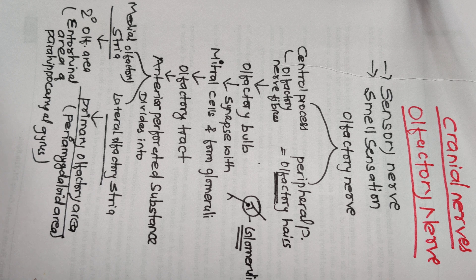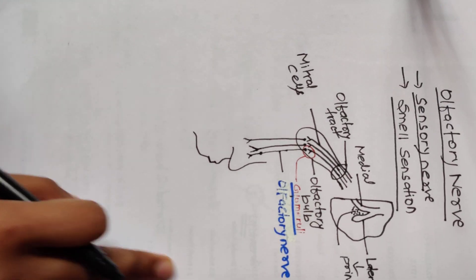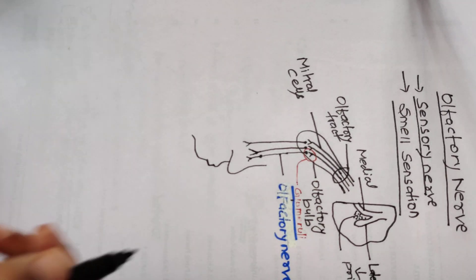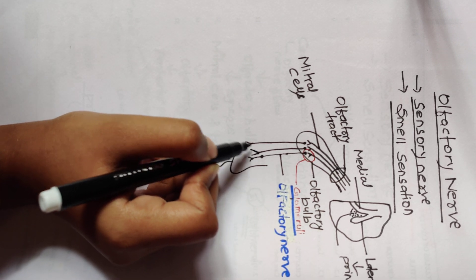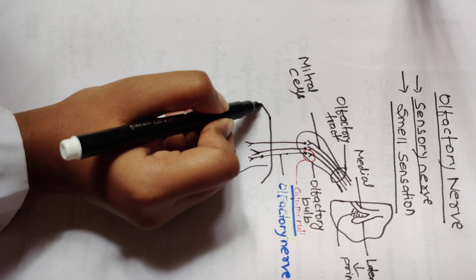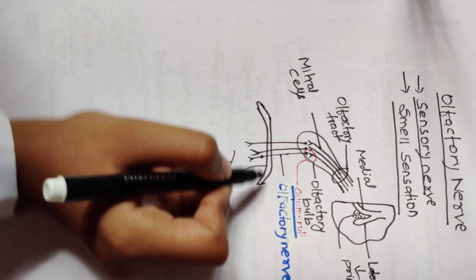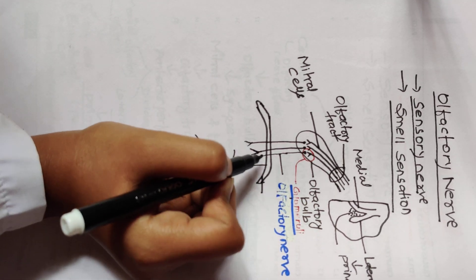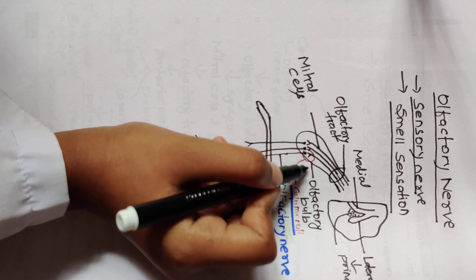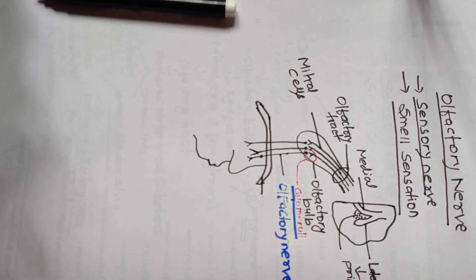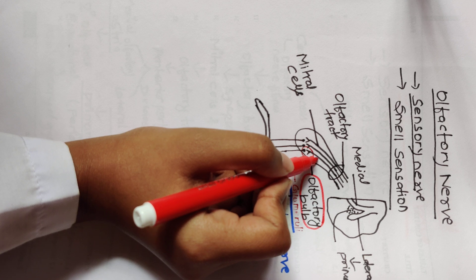Now let us discuss this in the diagram. You can take a screenshot for easy reference. In the figure, you can see this is the nasal area — the olfactory nerve arises from the upper part of the nasal area. It then crosses the cribriform plate of the ethmoid bone, and reaches the olfactory bulb. In the olfactory bulb it synapses with the mitral cells and forms the glomeruli.